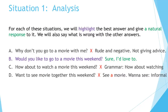What's wrong with the other ones? A. Why don't you go to a movie with me? — This sounds kind of rude and negative. You're not giving advice here. If you say 'Why don't you?' you're giving them a suggestion or advice. If you want to give an invitation, you can say 'Why don't we?' C. How about to watch a movie this weekend? — The grammar is incorrect. It should be 'How about watching a movie this weekend?' D. Want to see a movie together this weekend? — There's a problem with grammar. It's okay to say 'Want to see a movie this weekend?' — that's very informal. You don't have to say the full question: Do you want to see a movie?